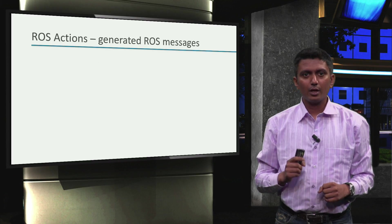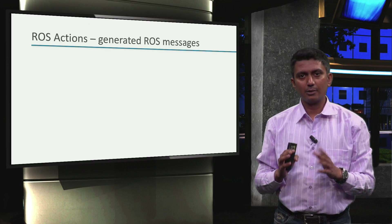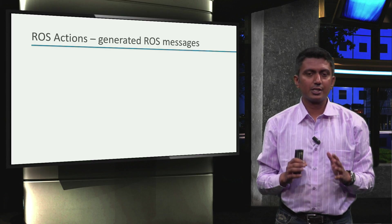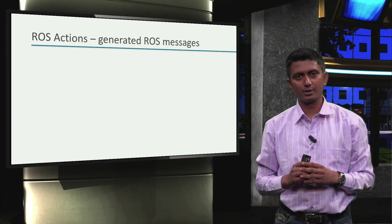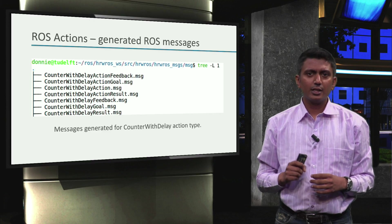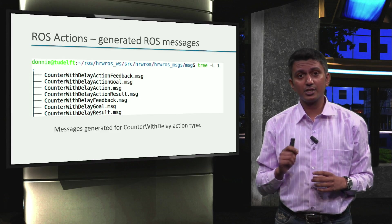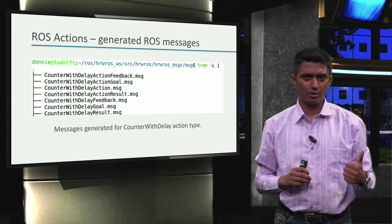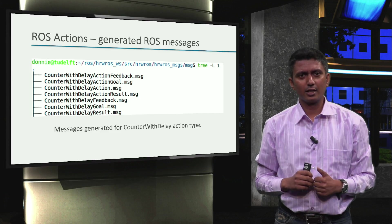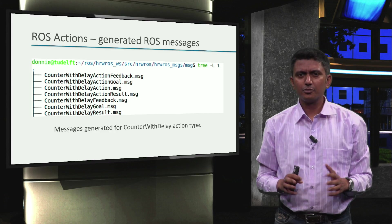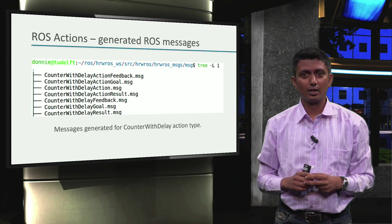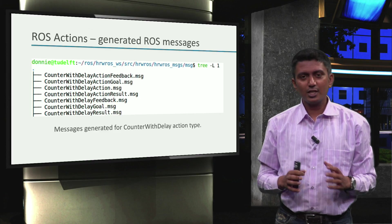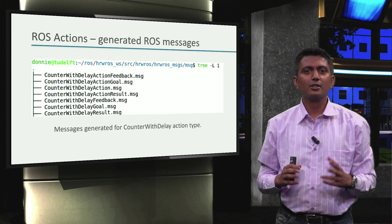In the last video, we added our action file to CMakeLists.txt. We also saw that we can use the genAction.py script to generate action messages for us. The genAction script generated 7 message files, but we only specified 3 message fields — one for the goal, one for the result, and one for the feedback in our action file. That would mean we expected only 3 message files to be generated, but we have 7. So let's try to understand why the additional messages are needed.